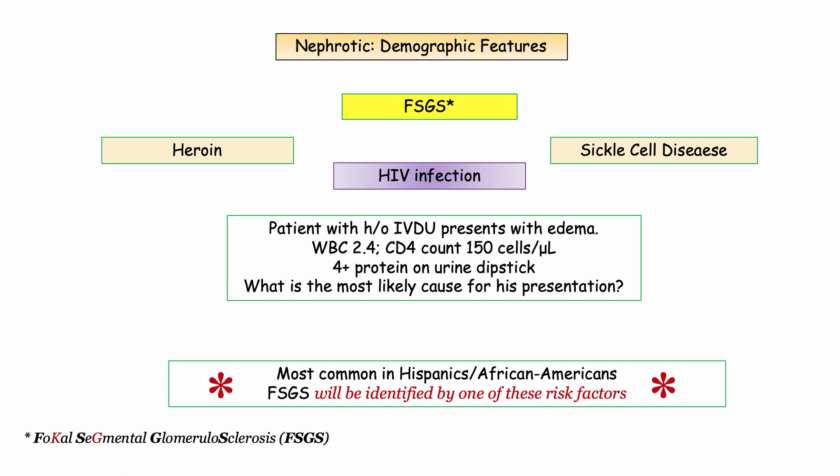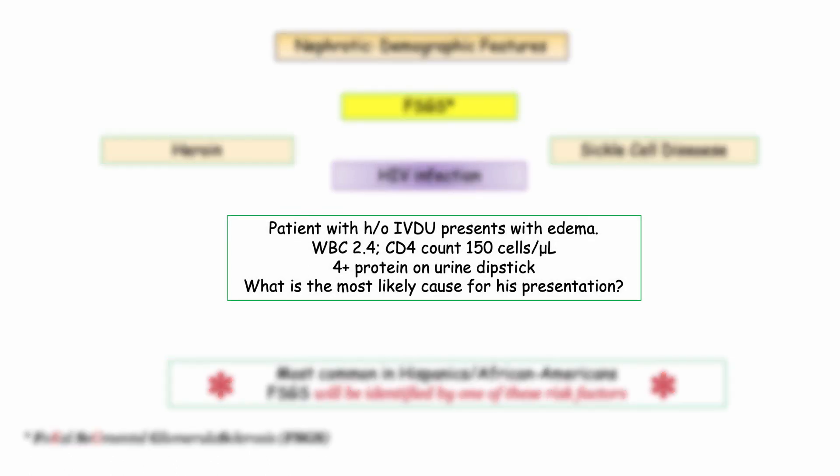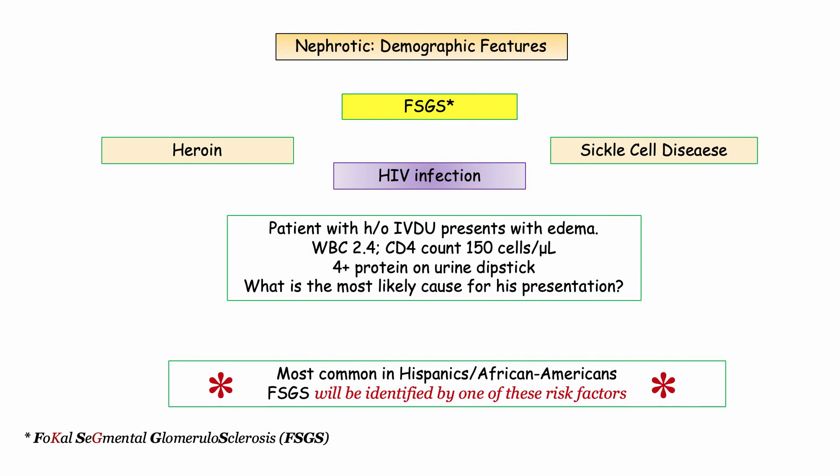You can expect a question to read something like this: a patient with a history of IV drug use presents with edema, a WBC count of 2.4 with a low CD4 count, and 4-plus protein on urine dipstick. What is the most likely cause? Answer: focal segmental glomerulosclerosis, based on the implied diagnosis of HIV infection. Without appreciating this association, you could not determine the correct answer.